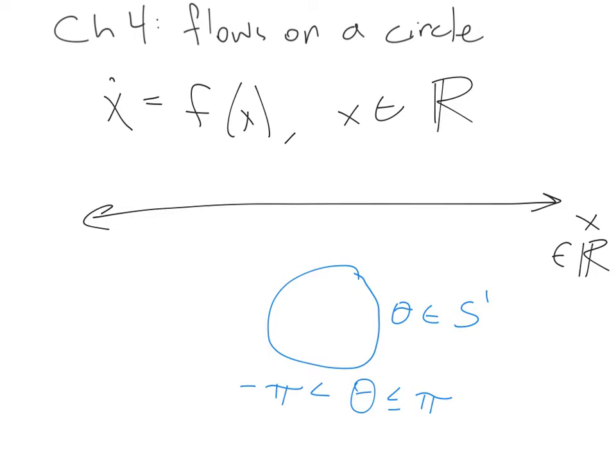So we're going to need to define our vector fields carefully. We want negative pi and pi to knit up seamlessly.